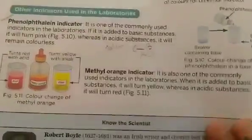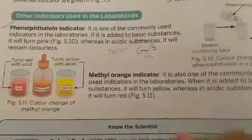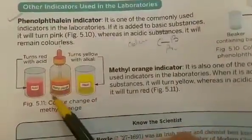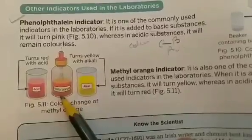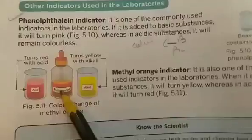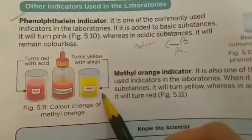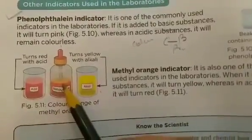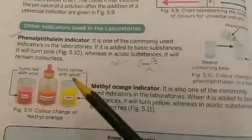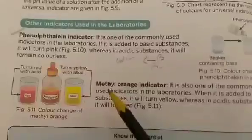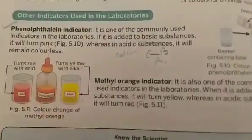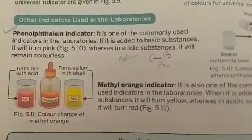The second indicator used in the laboratory is methyl orange indicator. The color of methyl orange indicator is light orange. If a base is added to methyl orange indicator, it converts to yellow color, and if acid is added, it converts to red color. So methyl orange and phenolphthalein are the two indicators used in laboratories to determine whether a given substance is acidic or basic in nature.